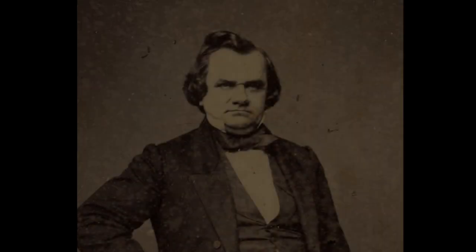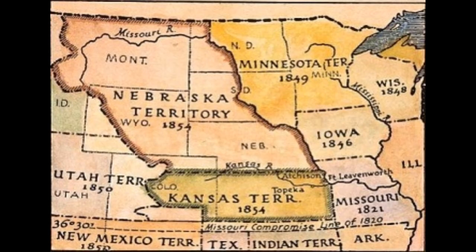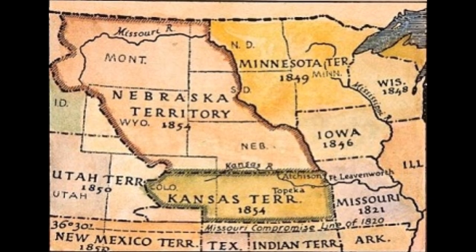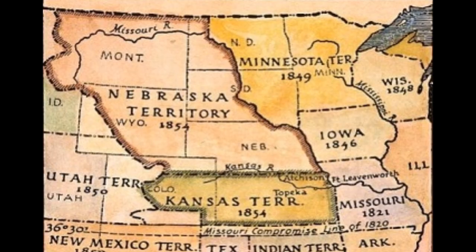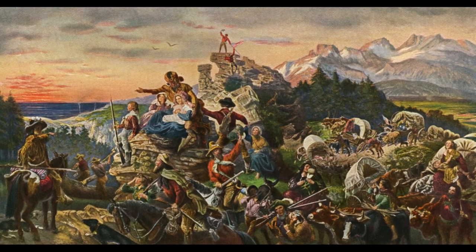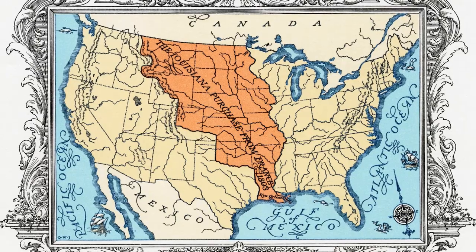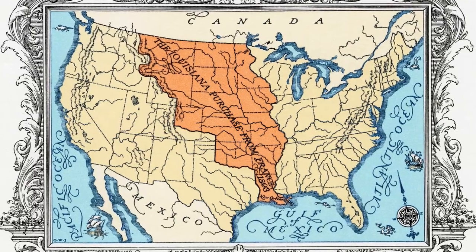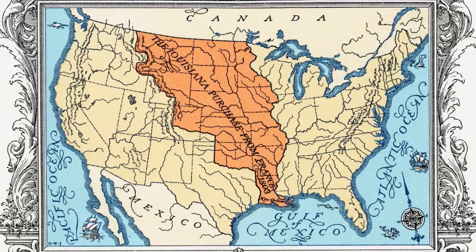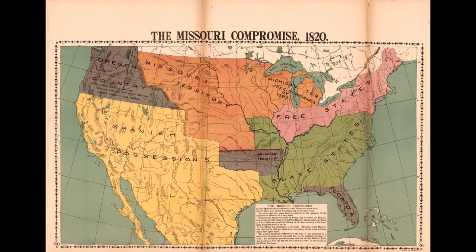In 1854, Senator Stephen A. Douglas introduced a bill that would create the Kansas and Nebraska Territories. The nation was growing rapidly, and the new territories would help expand the country westward. The Kansas and Nebraska Territories would be created from the remaining land from the Louisiana Purchase, north of the 36°30' Missouri Compromise Line.